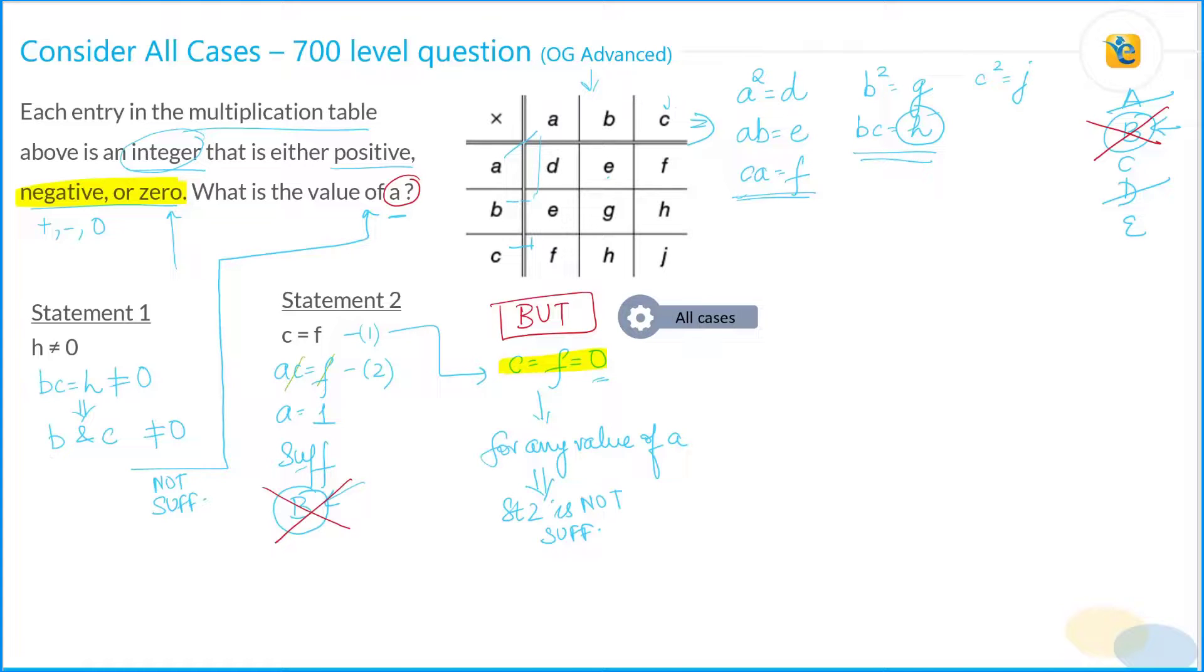We need to now combine statements one and two and see if we can get to the answer. So what's given here? Because h is not equal to zero, what you get is that BC is not equal to zero, which implies, you already said that, b and c are individually not equal to zero. Now c is equal to f.